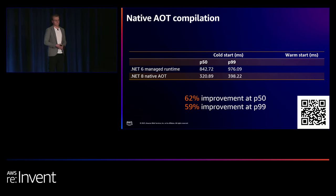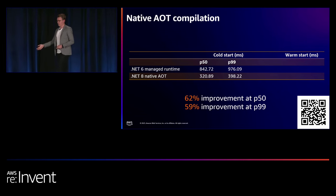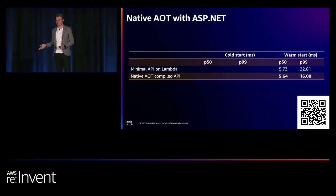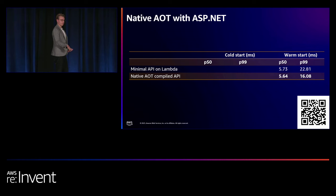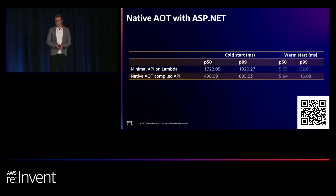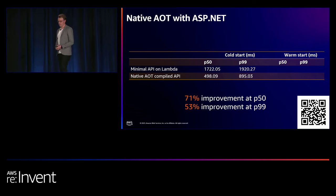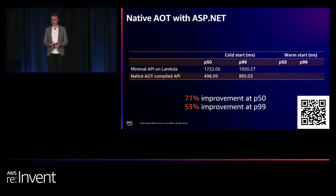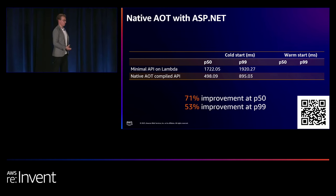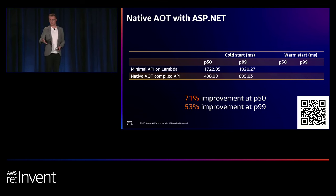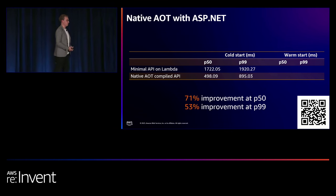With .NET 8, Microsoft announced limited support for ASP.NET with native AOT. Running minimal API on Lambda with .NET 6 versus the same minimal API natively compiled with .NET 8: warm start numbers are the same, but at cold start it's again a dramatic improvement — a 71% improvement in startup time at P50 and a 53% improvement at P99. This is an absolute game changer for building serverless .NET applications. Now let's explore how to turn on native AOT with Lambda and what trade-offs you need to deal with.